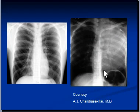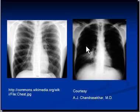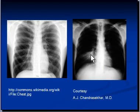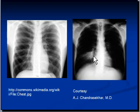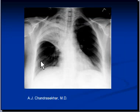Another example shows the left upper lobe entirely consolidated, while the left lower lobe is still aerated. There is also an area of consolidation in the right middle lobe, and you can see the pulmonary artery through the consolidated area. The right heart border is not clearly visible here.